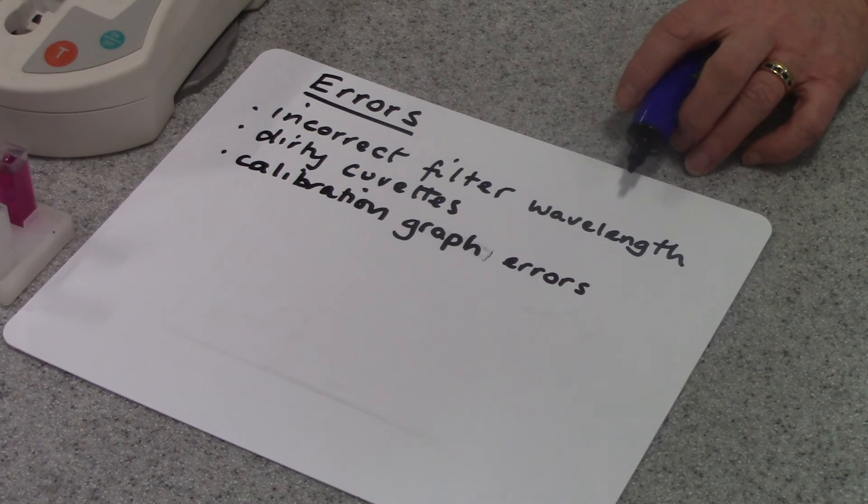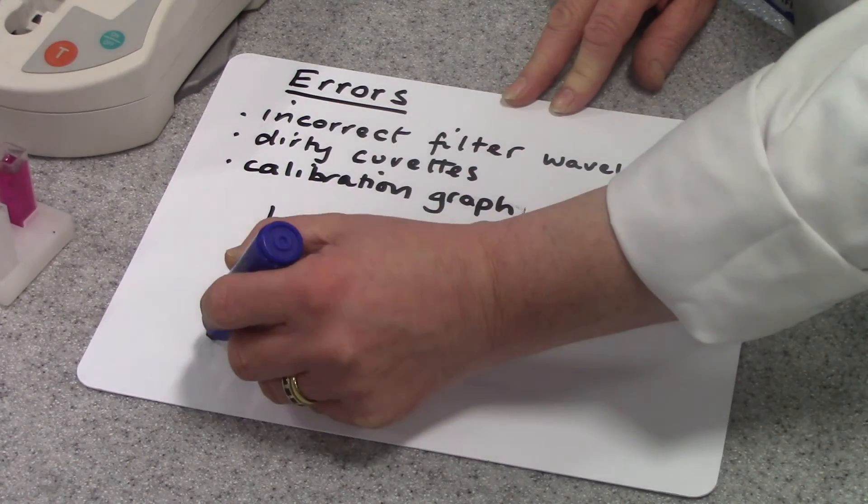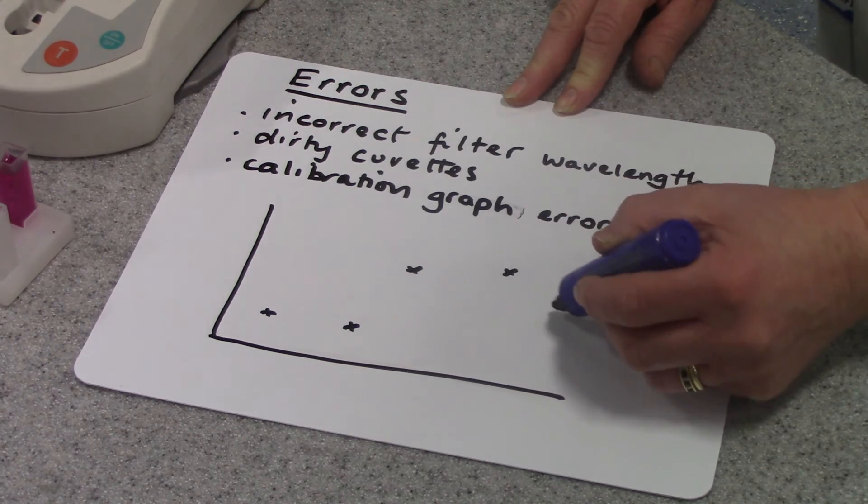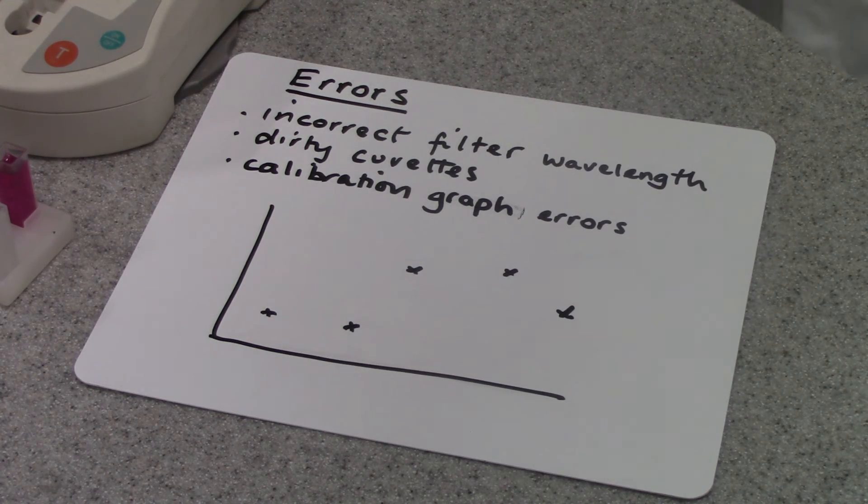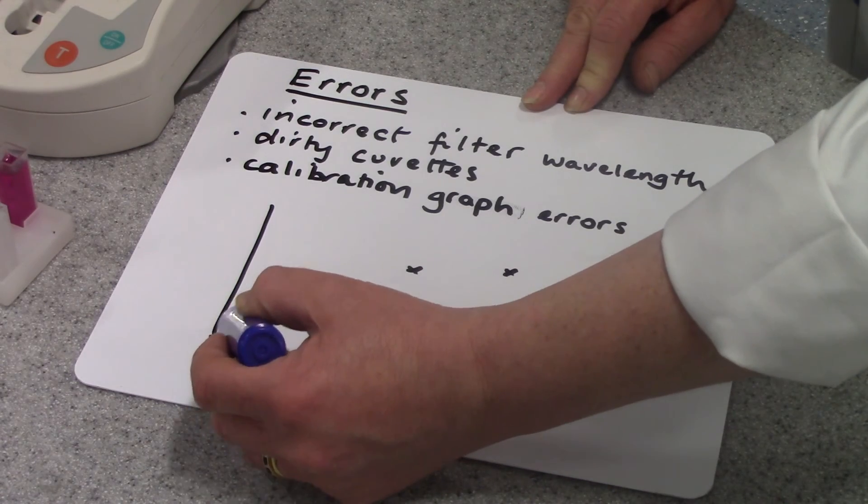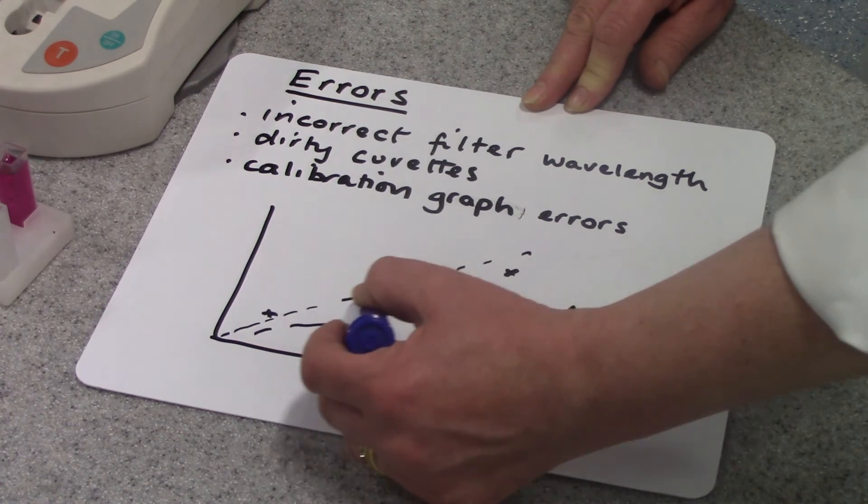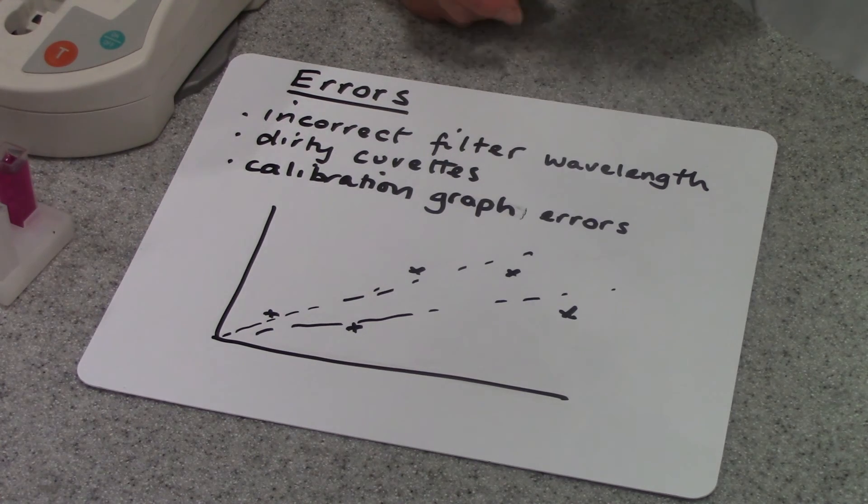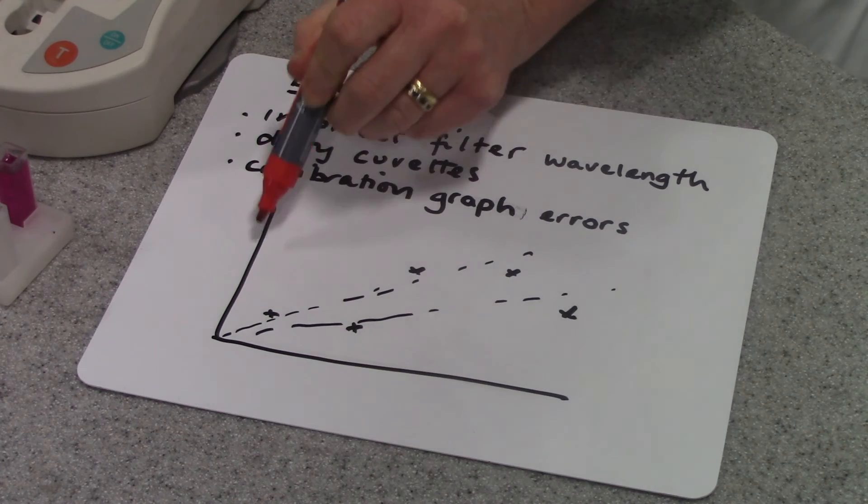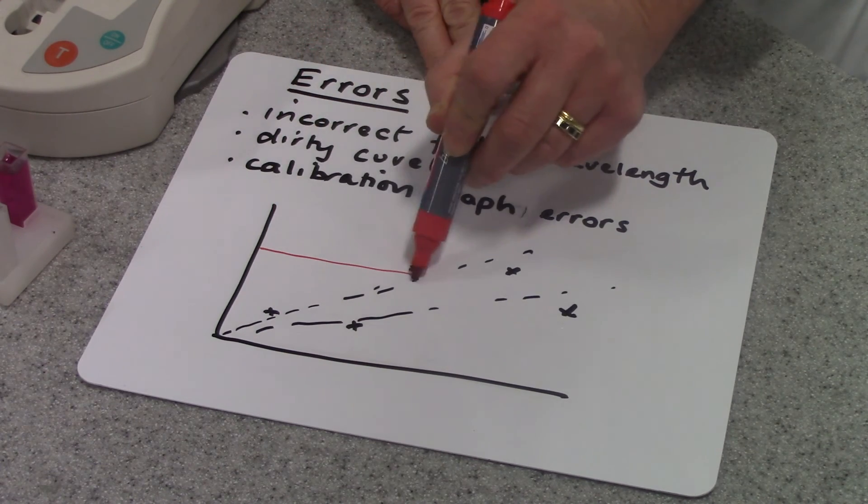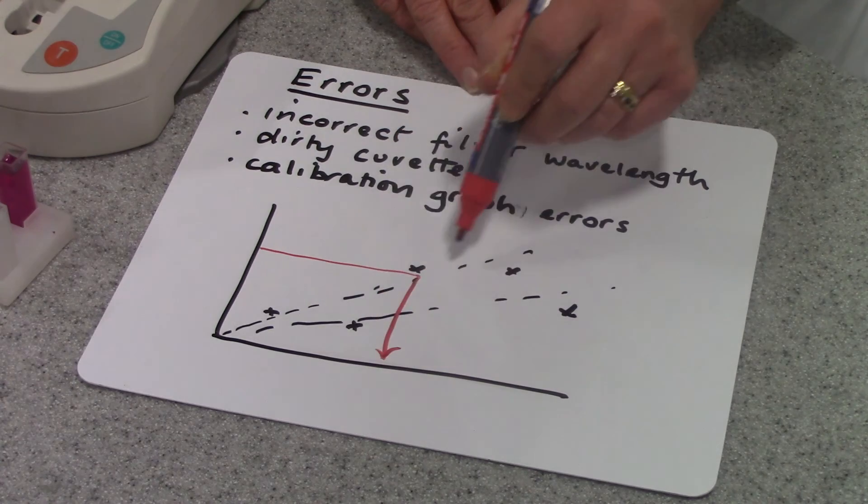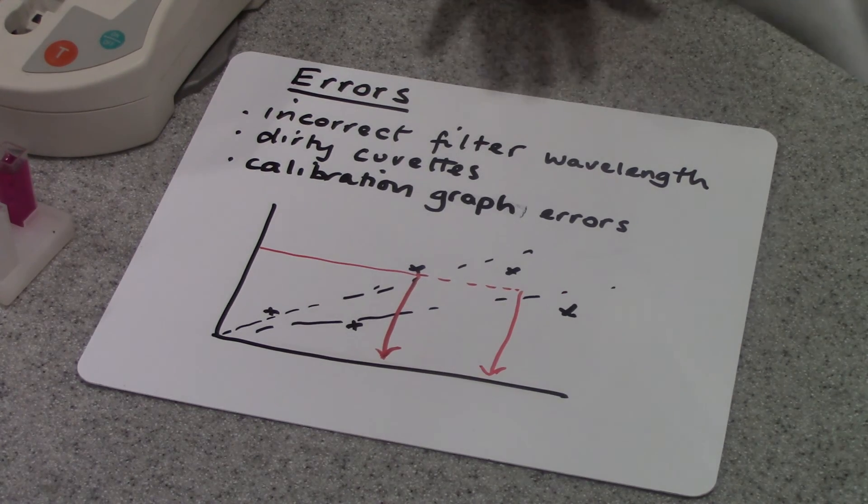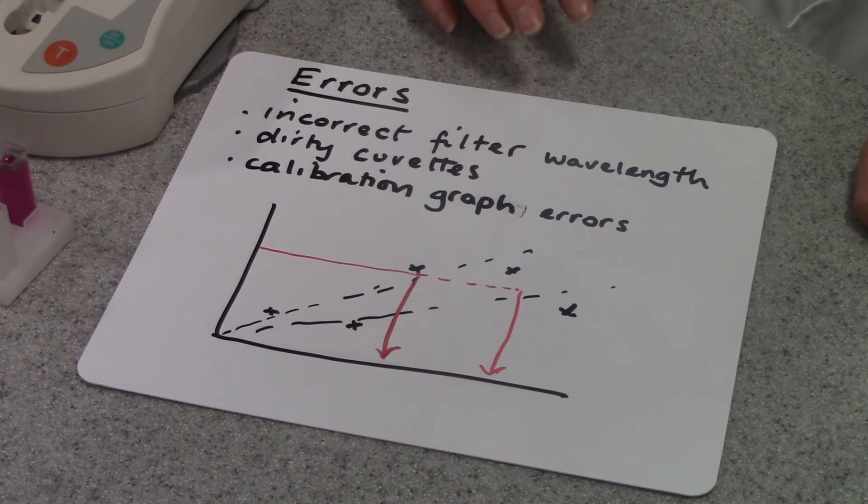And then the other error is the calibration graph. For example, if my data, when I do my calibration curve, if my data isn't in a perfect straight line, it can be difficult to know where to plot my line of best fit. I might plot it here or I might plot it here. And obviously, where you plot your line of best fit is going to affect the value that you read off. So getting an accurate calibration graph will help to minimize errors.